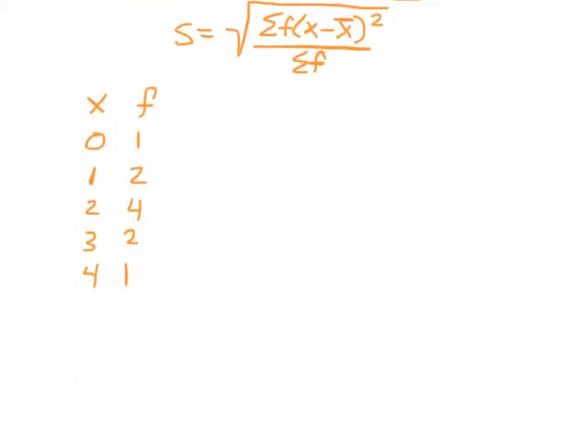The next column is going to be f times x. Notice that doesn't really appear in our equation, but it gives us some useful information and I'll show you that in a second. So we're going to multiply the first two columns together: 0 times 1 is 0, 1 times 2 is 2, and all the way down.